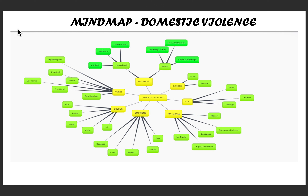I created a mind map that represented domestic violence. I looked into the location, the genders, the age, the materials I would need to create this product, the emotions, the color, and the types of domestic violence. Some of the materials I looked at were money, makeup, bandages, ice packs, drugs and medication. Some of the locations I looked at were public and household locations such as a living room, a bedroom, shopping centers, or social gatherings.